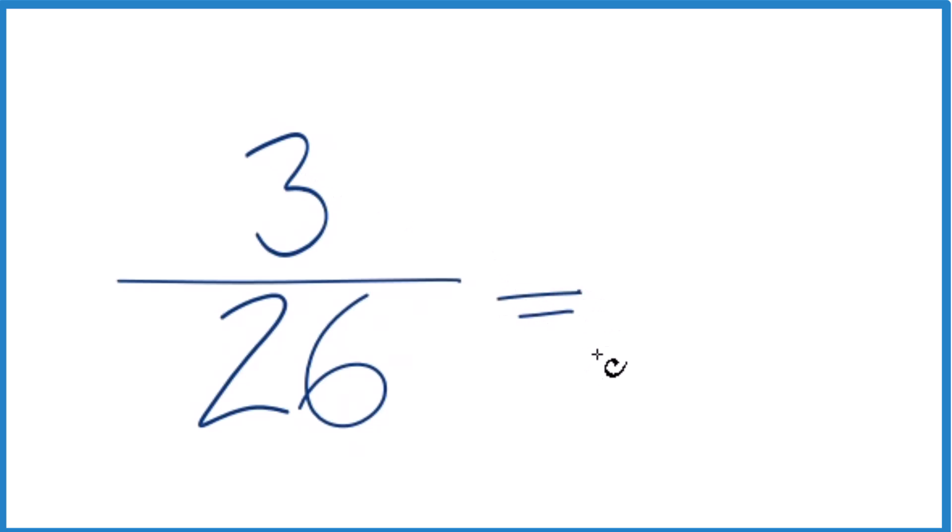So if we divide 3 by 1, 3 divided by 1 is just 3, we divide 26 by 1, we get 26. We're right back where we started.